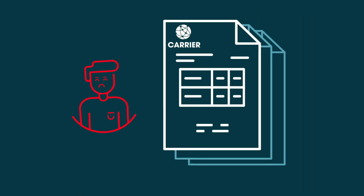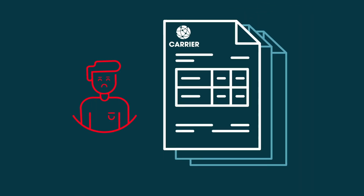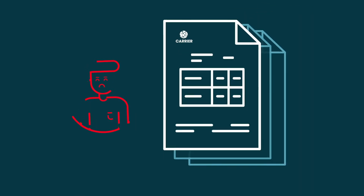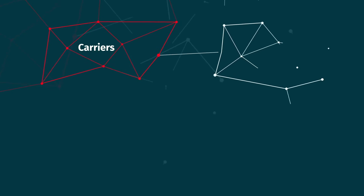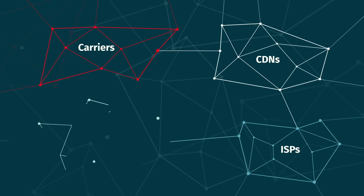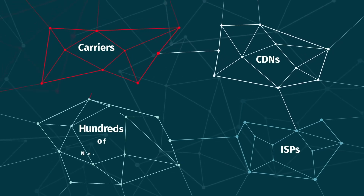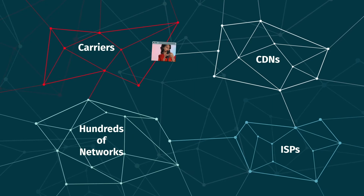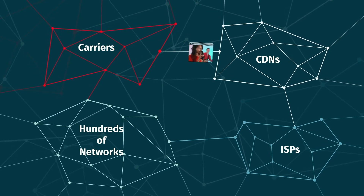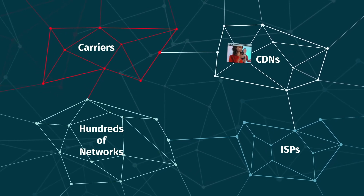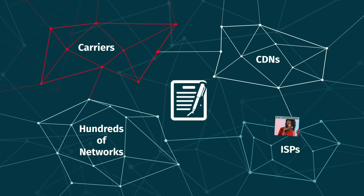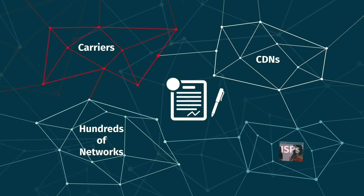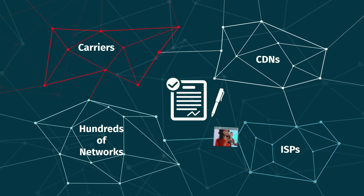They don't want to pay one big carrier to handle all their traffic. An internet exchange is a marketplace where participating networks agree to hand traffic off to each other — a process called peering, governed by peering agreements usually contracted on a cost-neutral basis.